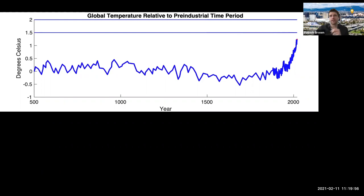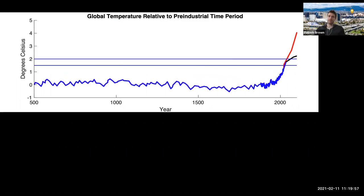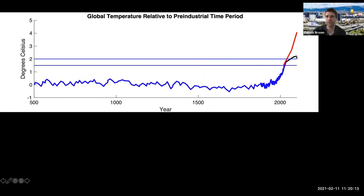We can also put on here estimates of temperature going to 2100. This would be a high emission scenario, and this would be more of a medium emission scenario where you're still not meeting the Paris goal but overshooting it a little bit. Putting both of those on there...